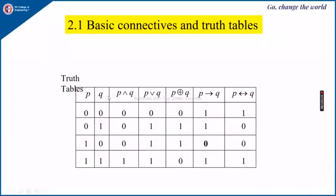Let us see some basic connectives and truth tables. Suppose P and Q are the propositions with the truth values 0,0 and 0,1 and 1,0 and 1,1.